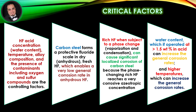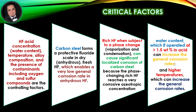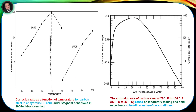Note that an azeotrope is a constant boiling temperature mixture of liquids. Water content, which if operated at 1.5 weight percent in acid, can increase the general corrosion rates. Higher temperatures can also increase the general corrosion rates, as shown in figures. Corrosion rates increase with increasing temperature, decreasing hydrofluoric concentration, and increasing water content.